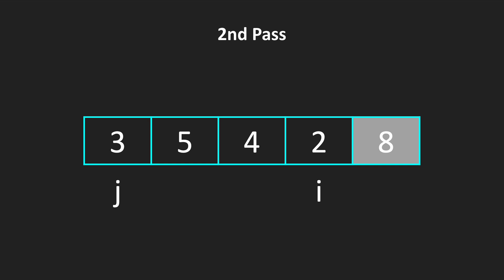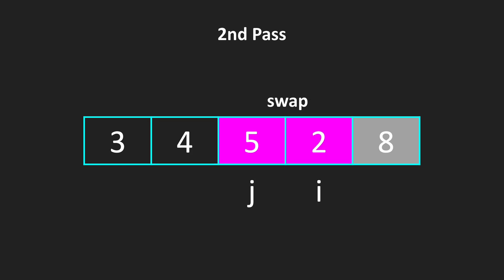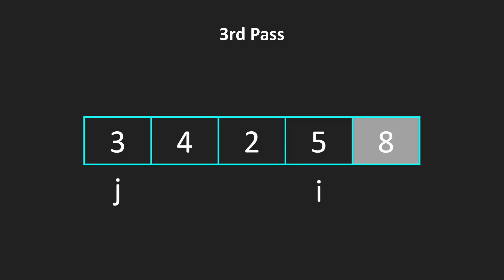So again, we are resetting our j. We are comparing j and j plus 1. They are in right order, so we are moving our j. And we are comparing 5 and 4. 5 is more than 4. We are swapping these two elements and moving our j, and we are swapping 5 and 2 also. So we have finalized our second pass.